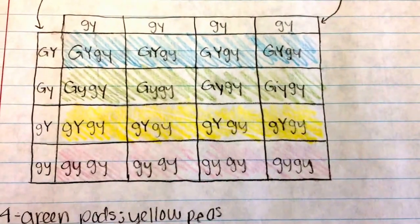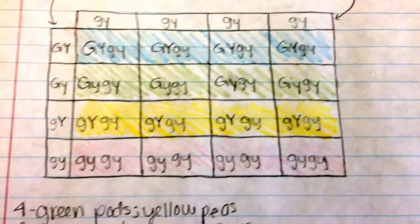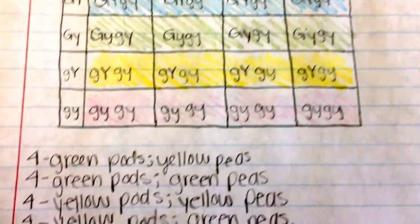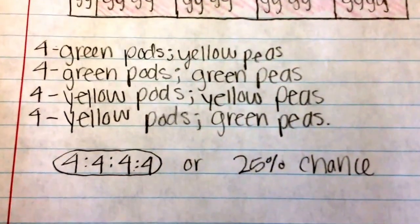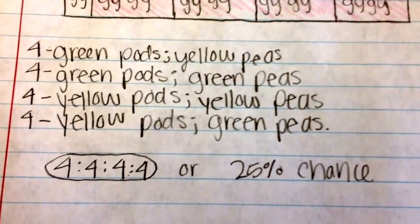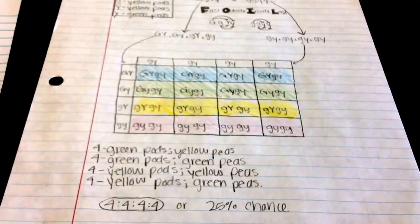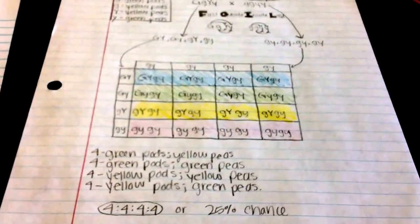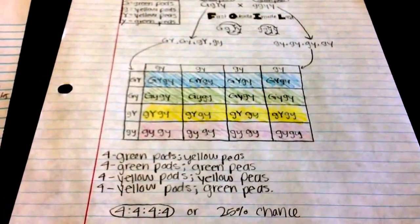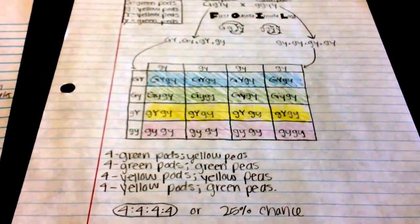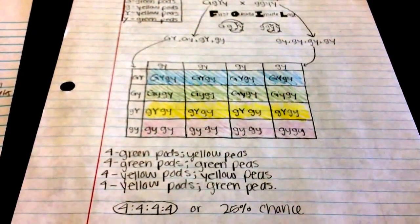In this particular cross, there are four of each possible phenotype represented, making this a 4 to 4 to 4 to 4 ratio, or 25% chance of each trait occurring. Though Punnett squares are accurate in predicting probable outcomes, the actual outcome cannot always be predicted using a Punnett square — it is all up to chance.